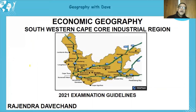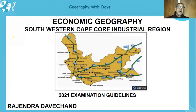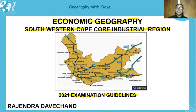Hello learners, hope you are keeping well. Today we are looking at a core industrial region under economic geography — the southwestern cape — and we'll be basing it on the 2021 examination guidelines.